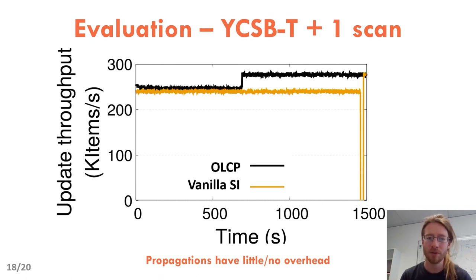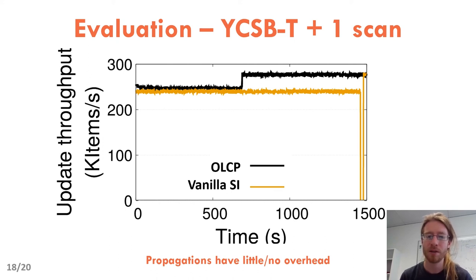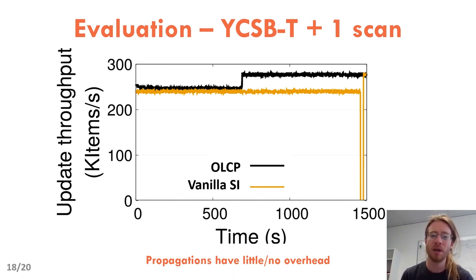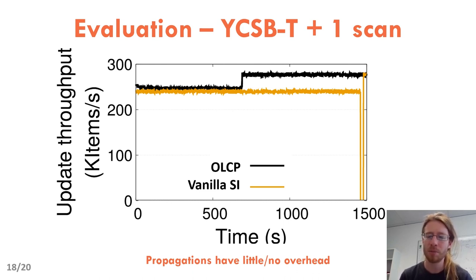The third result is the effect of OLCP on concurrent update transactions. This graph shows the throughput of concurrent updates over time. The scan with OLCP lasts around 600 seconds, and after 600 seconds the throughput of updates goes up because the scan is over. So OLCP interferes less with updates, on average, than standard snapshot isolation. When the scan runs, both OLCP and snapshot isolation have the same impact on concurrent updates, showing that propagations do not have any overhead or adverse effects on performance. You may also notice a dip at 1500 seconds when the snapshot isolation scan aborts — it's because the database has to clean over 350 million old items, and the garbage collector stalls the database for a few seconds while cleaning the old versions.